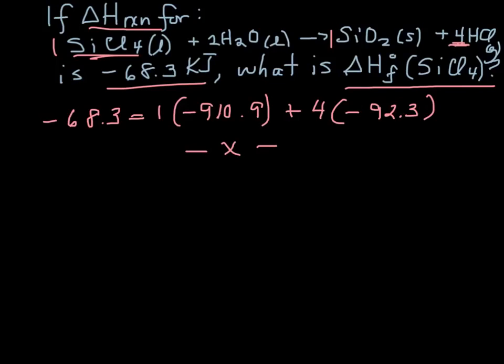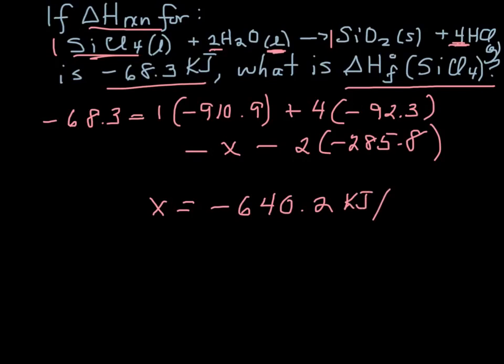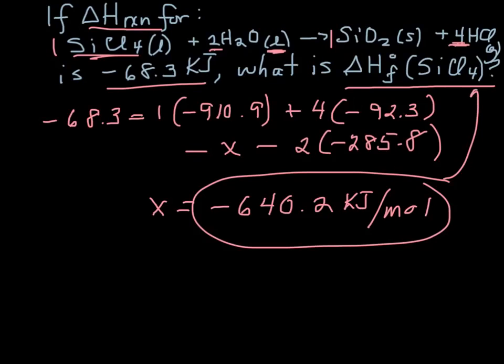Minus - so add all the products, subtract all the reactants - 2. Now be careful when you look in the table. Water and steam have different values, so you have to check to see if there's an L or a G. For water, it's minus 285.8. So with a little bit of careful mathematics, I will do all that out, and I will get it to be minus 640.2. And now since this is a heat of formation, it's kilojoules per mole. So that would be the value for the heat of formation for SiCl4.